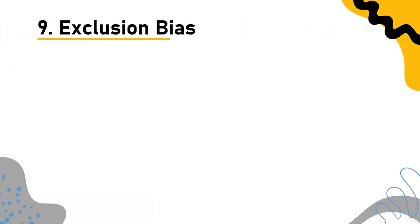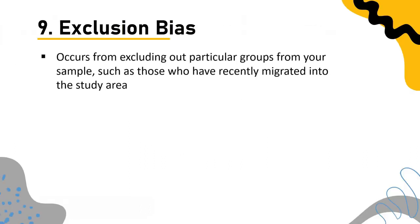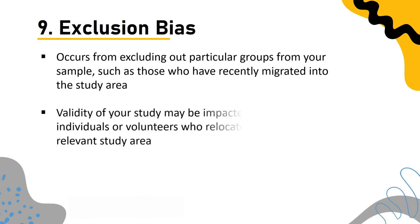Exclusion bias: This bias occurs from excluding particular groups from your sample, such as those who have recently migrated into the study area. The validity of your study may be impacted if you exclude individuals or volunteers who relocate outside the relevant study area.